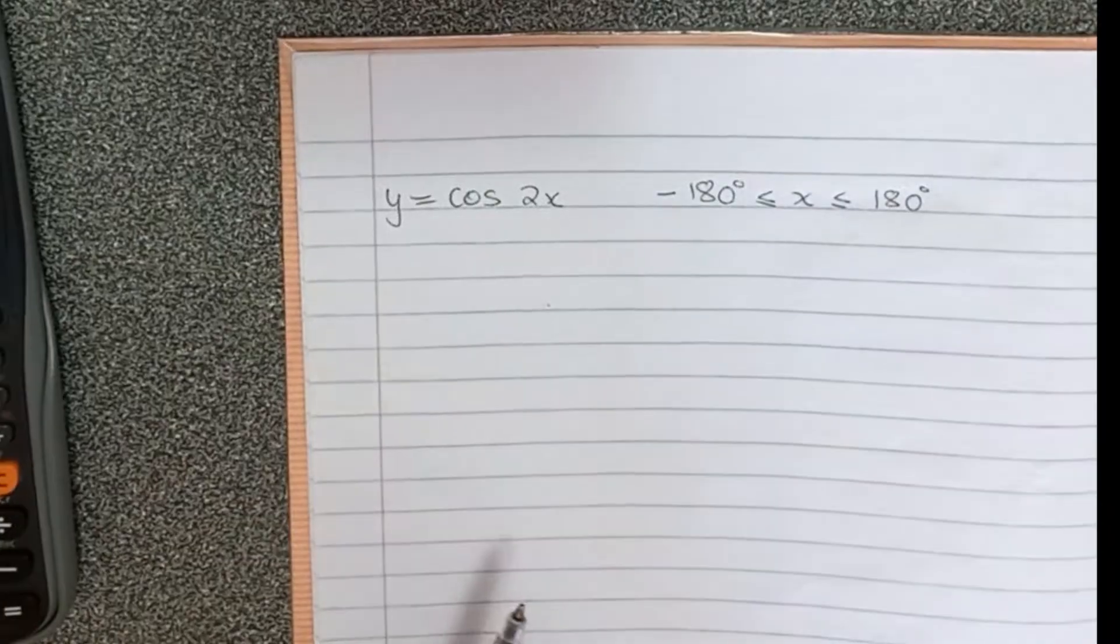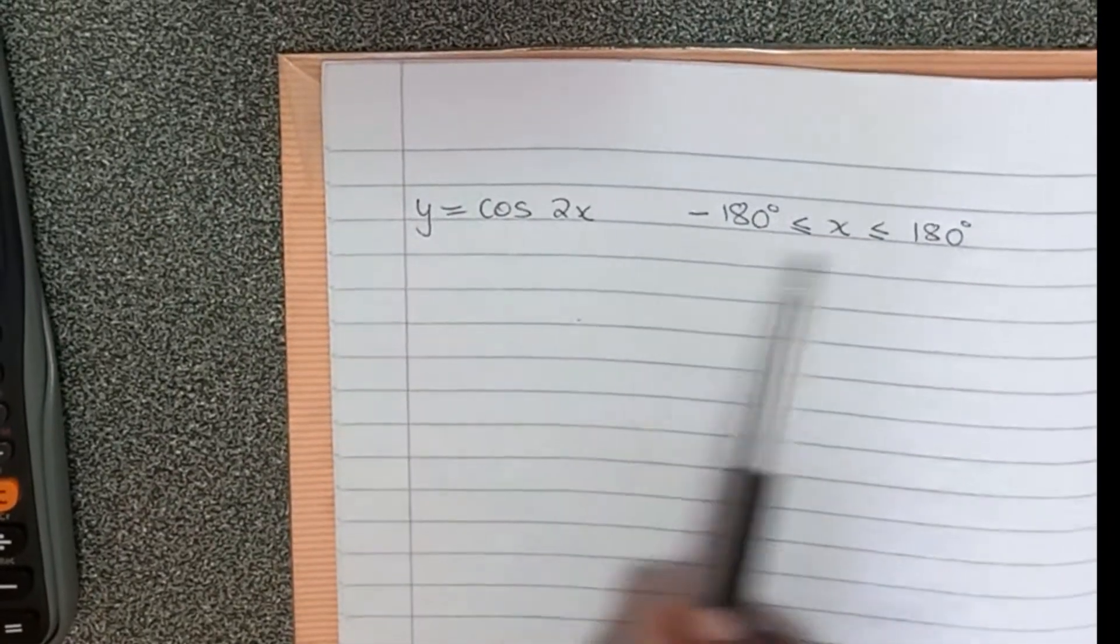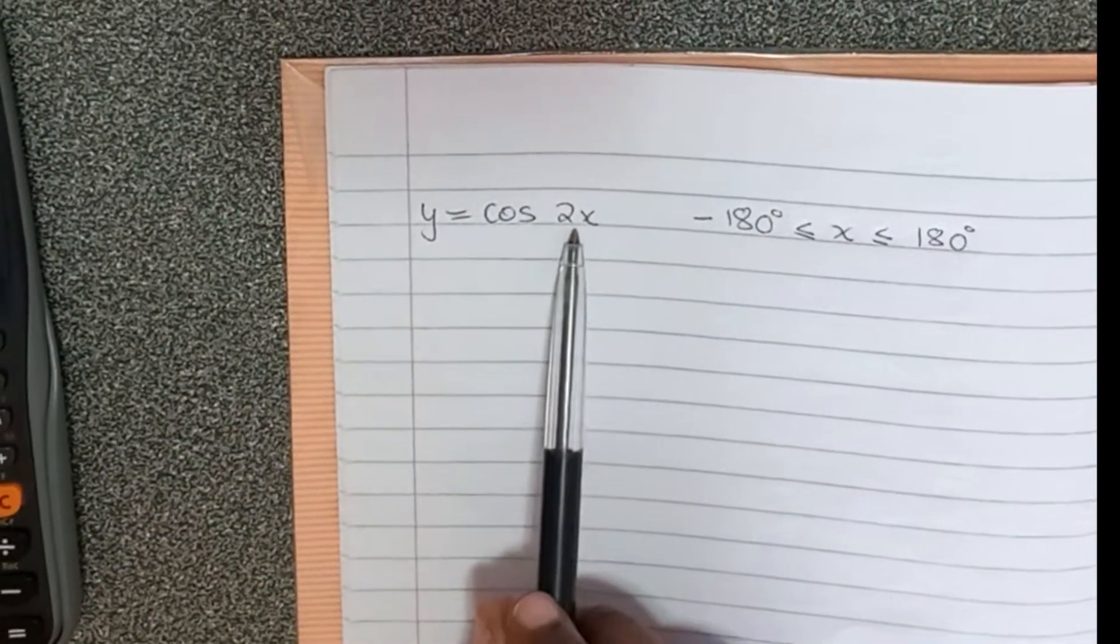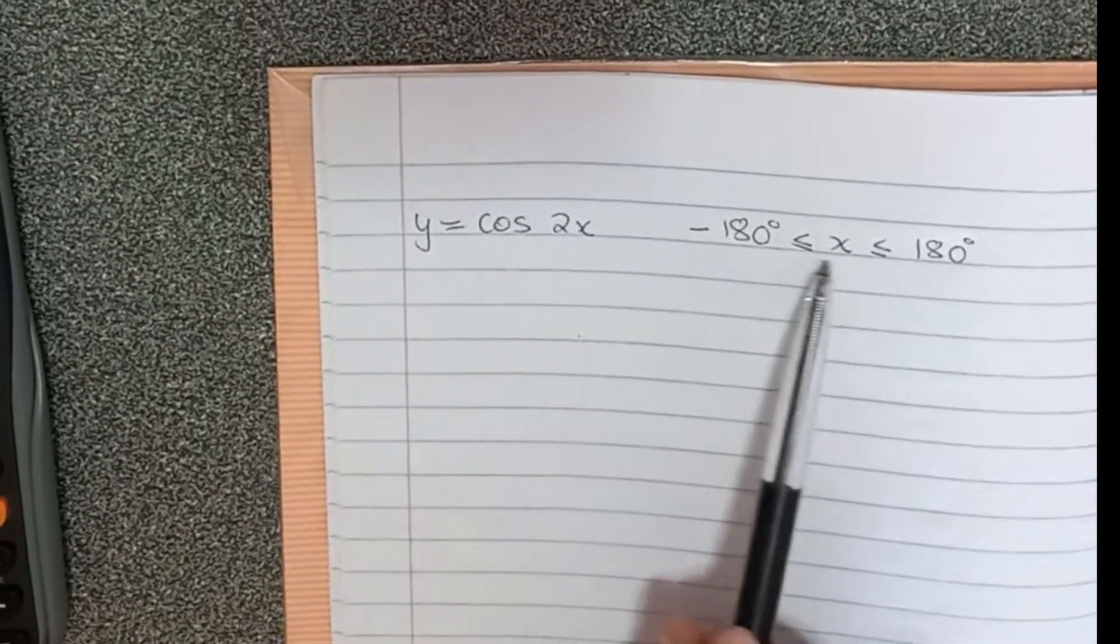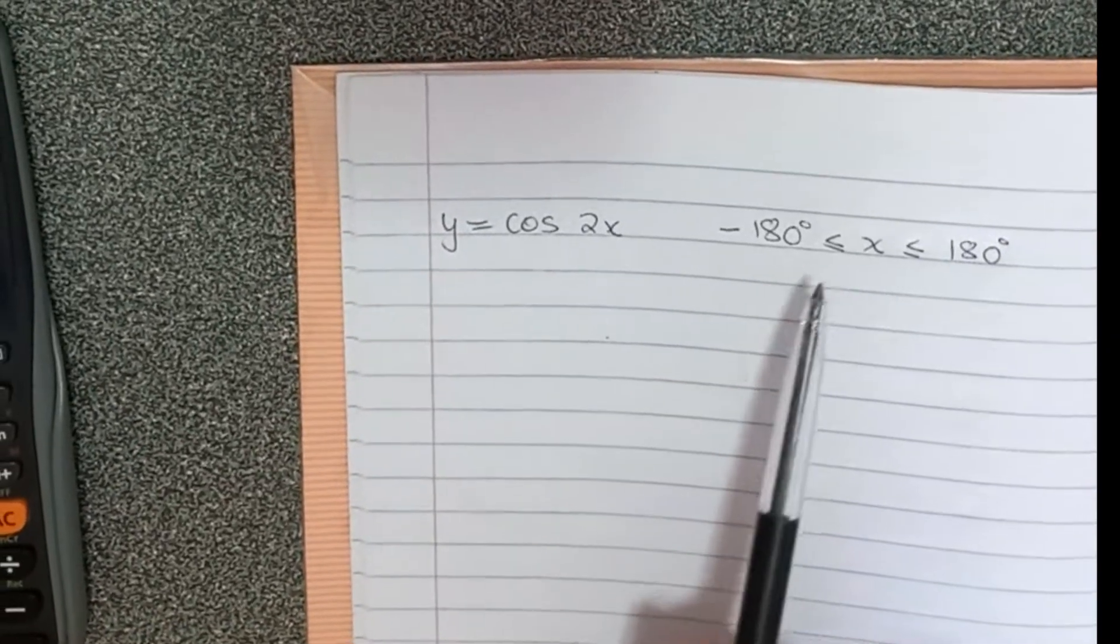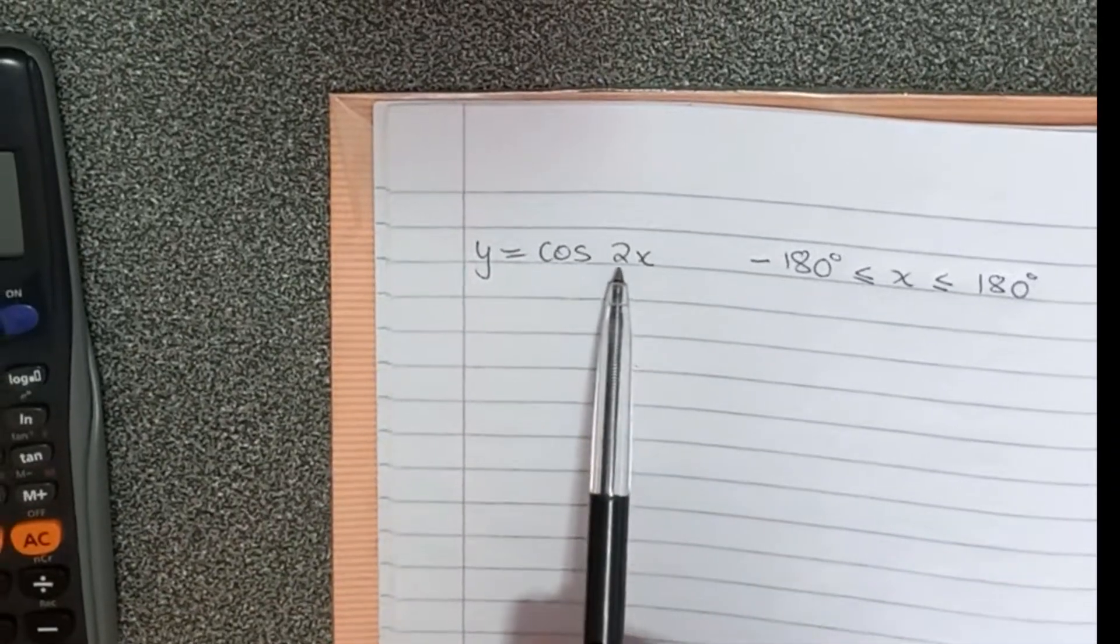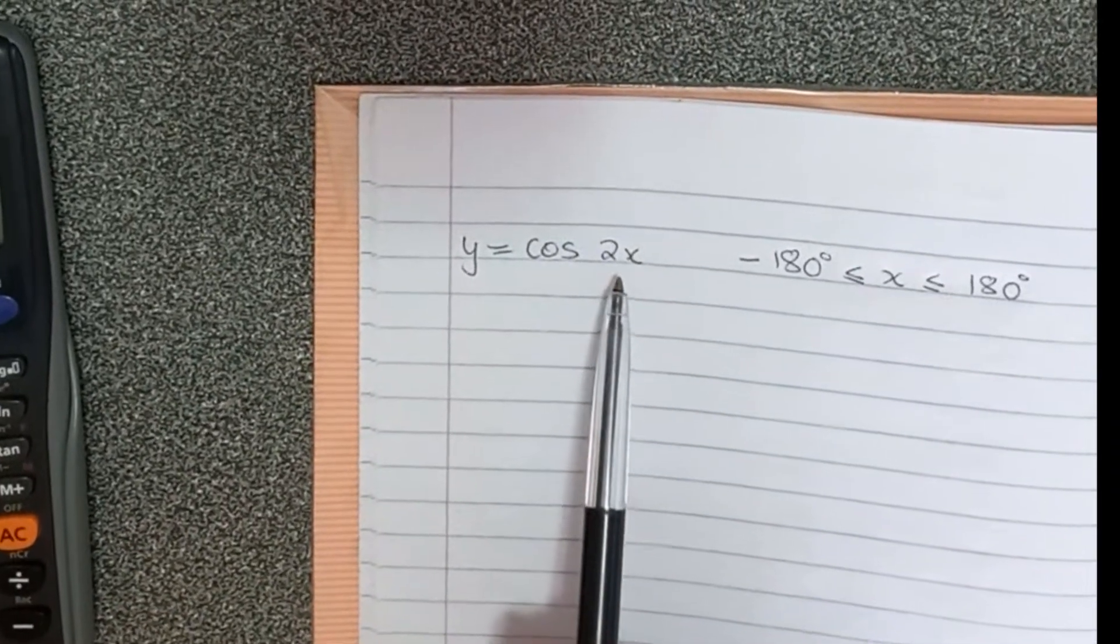Let's look at another function. The next function we're going to draw is y equals cos(2x), and the interval is x is greater than minus 180, less than 180. Now with this function, they've changed the interval.